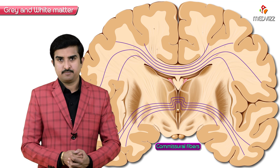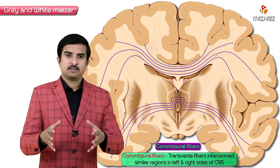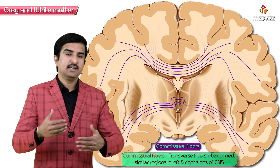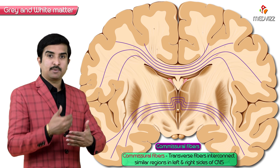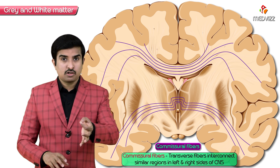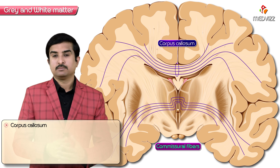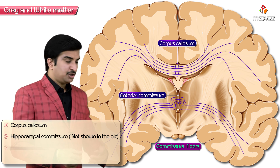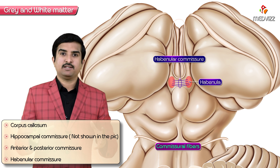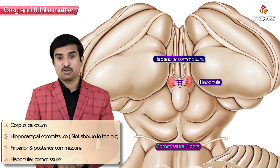Commissural fibers are transverse fibers that interconnect similar regions on the left and right sides of the central nervous system — including the brainstem, cerebral hemispheres, cerebellum, and spinal cord. The white matter commissural fibers include the corpus callosum, hippocampal commissure, anterior and posterior commissure, and the habenular commissure. These all comprise the white matter of the central nervous system.